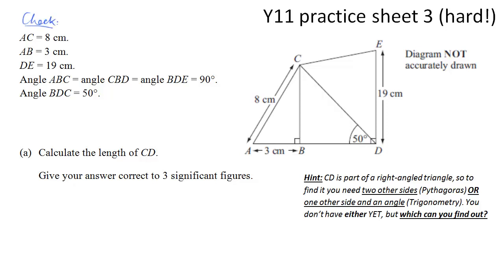So the question is like this, when you've got a lot of information, check that it's all on the diagram. So AC is 8cm, that's on the diagram. AB is 3cm, that's already labelled.